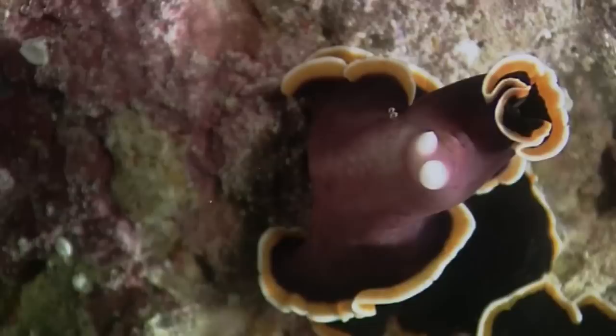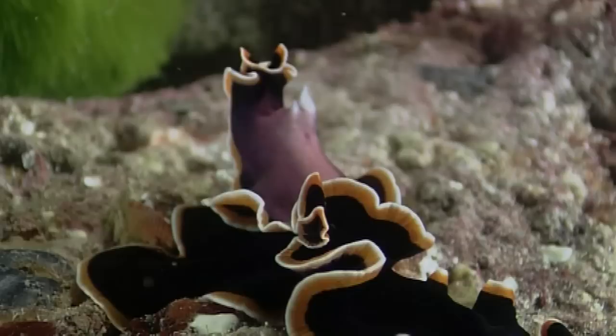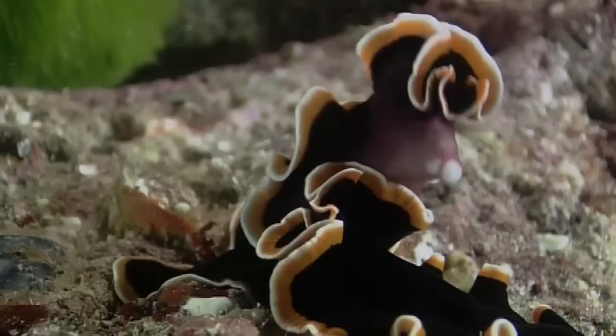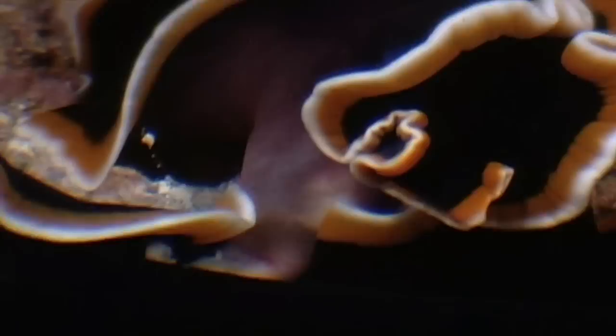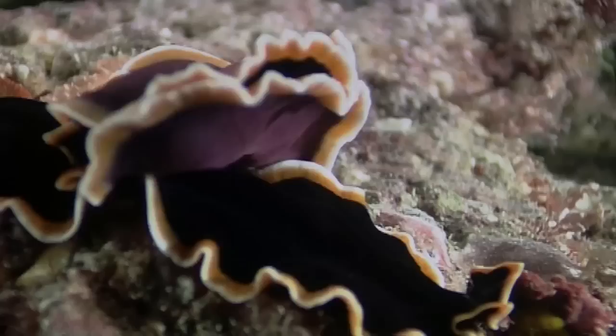From the midsection of each flatworm, double daggers protrude. Each dagger is actually a penis. The first one who can make a successful jab delivers its sperm.